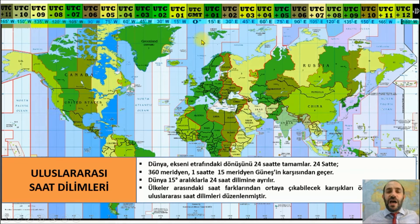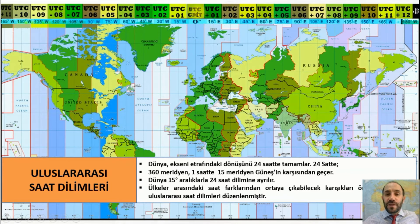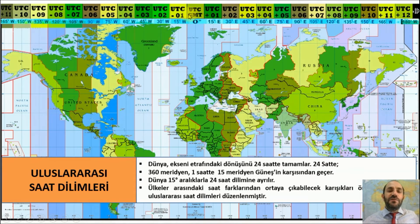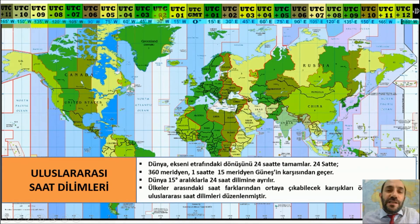Bazı yayınlarda tam bir daire olarak doğudan 1'den başlayıp batıya doğru 24'te bitirebilir; ya da 12-12 ayırarak gösterebilirler. Greenwich'in doğusundaysanız artı 1, artı 2, artı 3 şeklinde devam eder; bu Greenwich'e göre saatinizin ne kadar ileride olduğunu gösterir. Batıda eksi 1 saat dilimindeyseniz Greenwich'e göre 1 saat geridesiniz demek olur; eksi 2'de 2 saat geridesiniz.